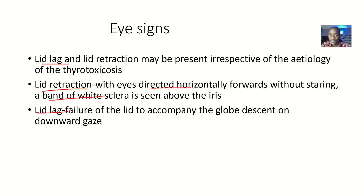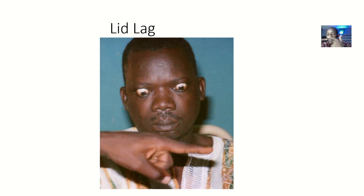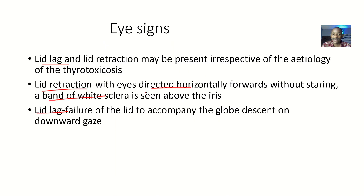For lid lagging, it's more like you are looking down. As I'm looking down, my eyelid should be looking down too. But if I'm looking down and my eyelid is still backward, that means my eyelid is lagging behind — instead of going together with the eye, the eyelid stays backward while the eye moves forward. That means it is lagging. That's a classical eye sign for thyrotoxicosis.